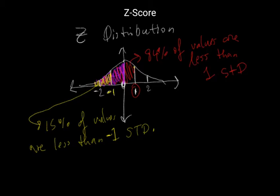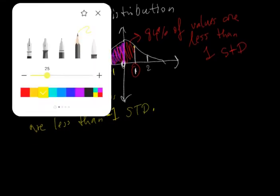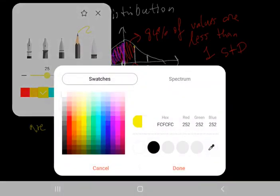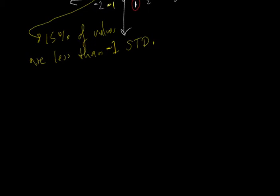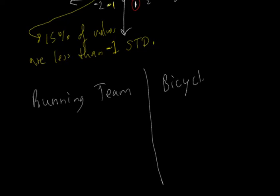And so practically, how would we use the z-score? Suppose your cousin wanted to know whether they should join the running team or the bicycle team.